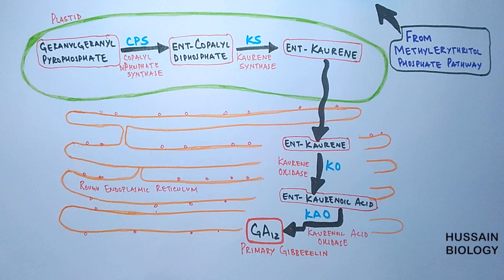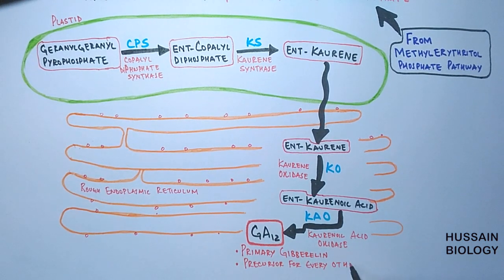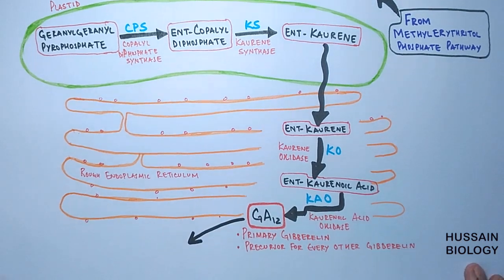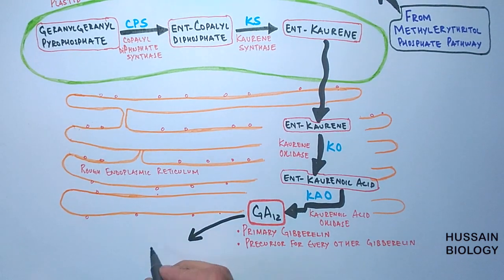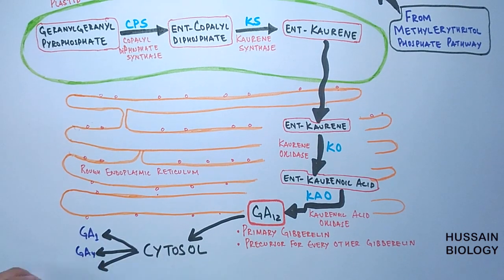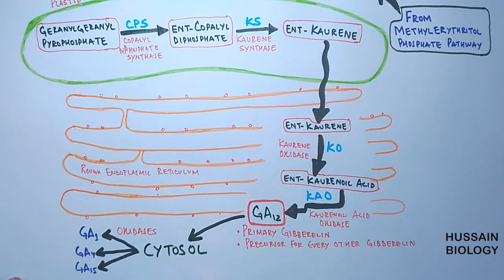GA₁₂ is the primary gibberellin produced in this biosynthetic pathway and is the first gibberellin formed in plants. GA₁₂ acts as a precursor molecule for all other gibberellins. To synthesize more gibberellins, GA₁₂ is transported to the cytosol where it is oxidized into different gibberellins. This is how gibberellins are synthesized in plant cells.